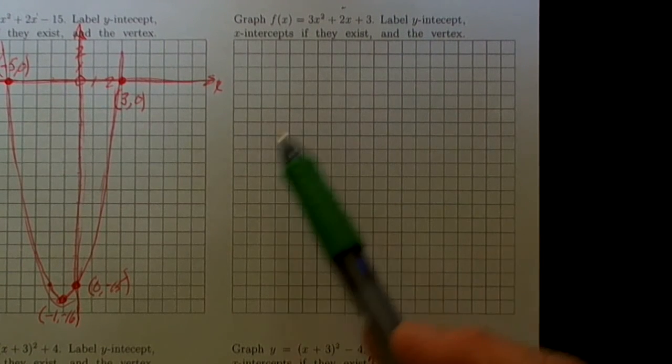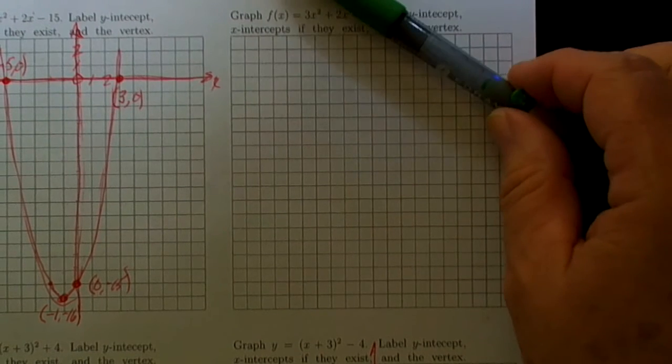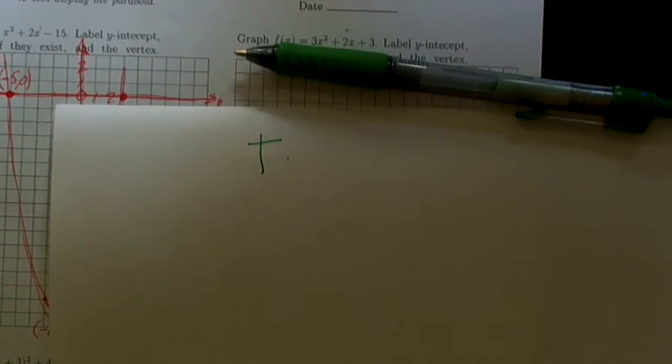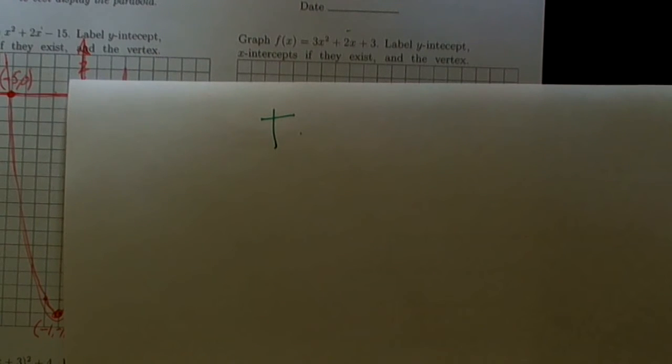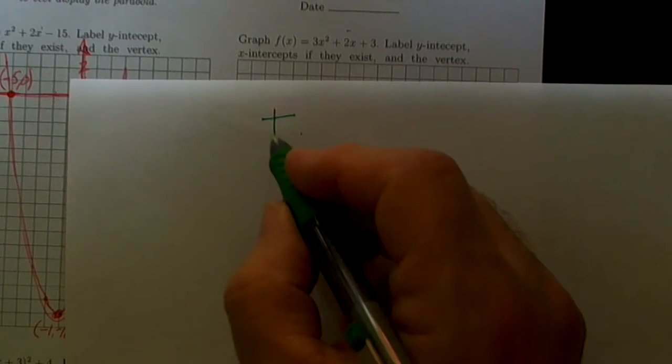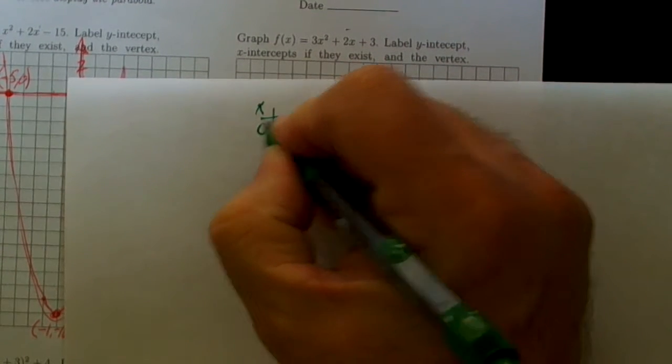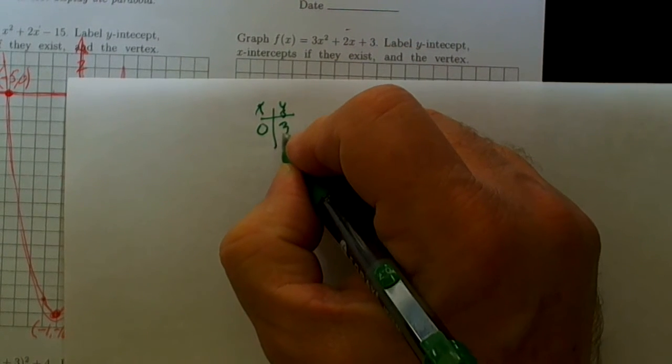We need to fit all that nicely onto this piece of graph paper. We'll look at some details about this particular function. This function is going to be very easy for us to find the y-intercept because that's when x is equal to 0, so the y-intercept is at 3.